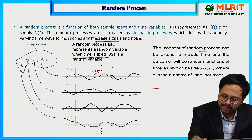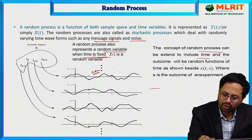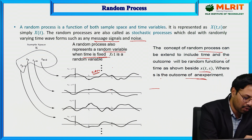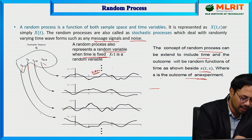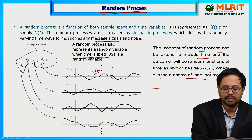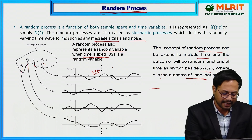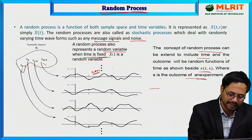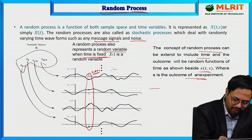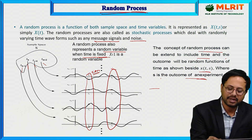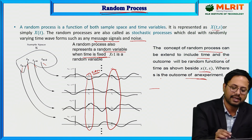The concept of random process can be extended to include time, and the outcome will be the random fluctuations, X(t, s), where s is the outcome of the experiment. Each outcome maps to a waveform, which represents the definition of random process. It can be four cases or N cases. At a fixed time duration, the process behaves as a random variable. If the time is varying along with the sample point, that is called a random process.